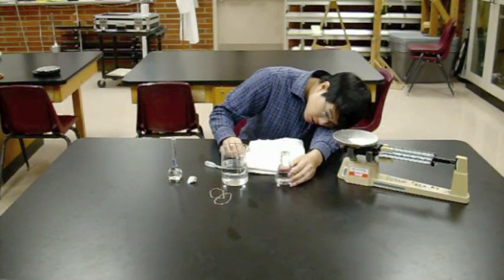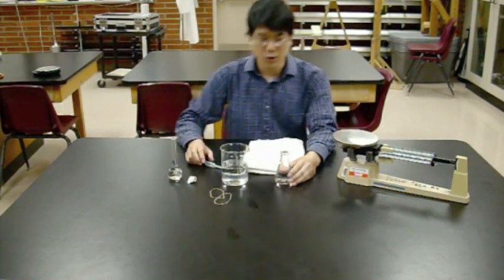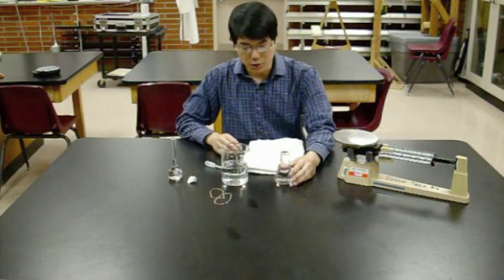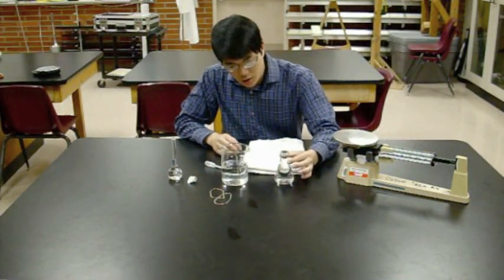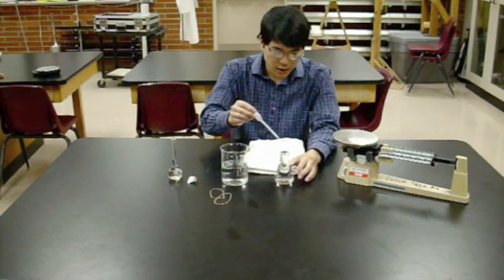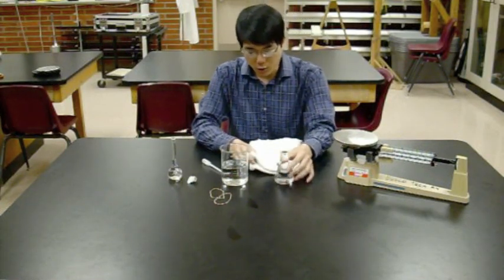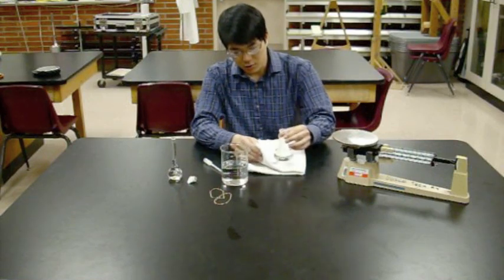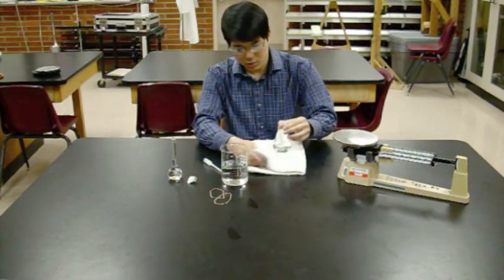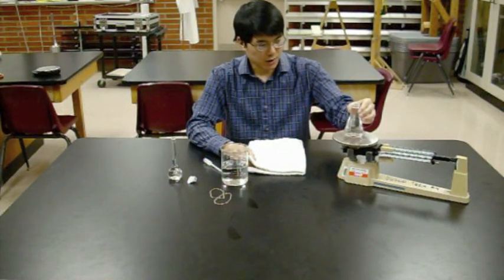That is about as level a surface across the water as we're going to get. If you've got a little bit of an upward meniscus, again, suck off a little bit of water with your pipette. If you've got water on the outside, dry it off with a towel. And then put it back on the scale.